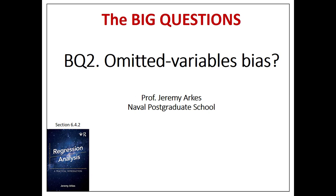This video is on the second of the big questions on the things that can go wrong in a regression model — the pitfalls. This big question is whether there is omitted variables bias, and this is covered in section 6.4.2 of the book.